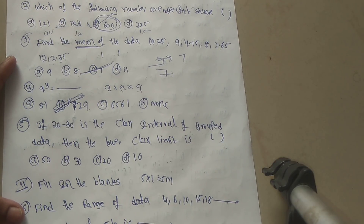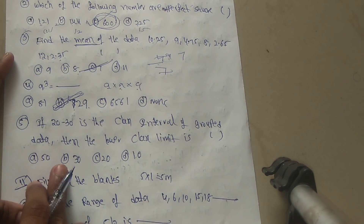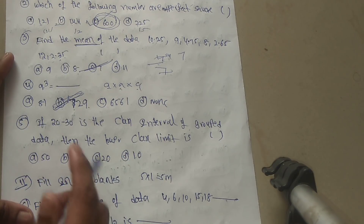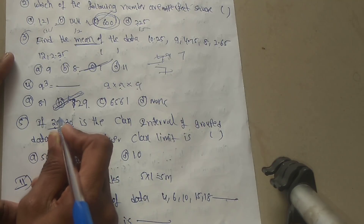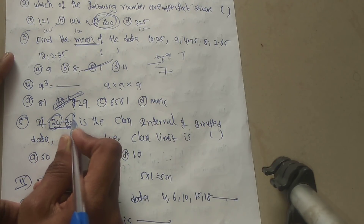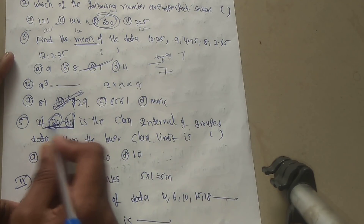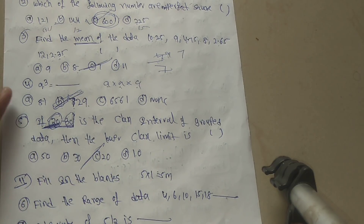Fifth question: if 20–30 is the class interval of grouped data, then the lower class limit is? Option A: 50, Option B: 30, Option C: 20, Option D: 10. In the interval 20–30, the first number is the lower limit and the last is the upper limit. So the lower class limit is 20 — Option C.